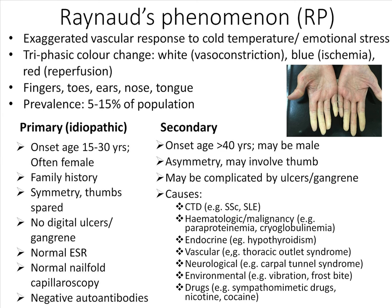Raynaud's phenomenon was first described by Maurice Raynaud in the 19th century. It is due to an exaggerated vascular response to cold temperature or emotional stress. Abnormal vasoconstriction of digital arteries and cutaneous arterioles due to a local defect in normal vascular response is thought to underlie the disorder. The typical triphasic color change is white, denoting vasoconstriction; blue, denoting the ischemic phase; and red, denoting reperfusion. There is a sharply demarcated color change that typically affects the fingers and toes but can occur in the ears, nose, and tongue as well. It is relatively common, with a prevalence of 5–15%, more prevalent in countries with a cold climate.